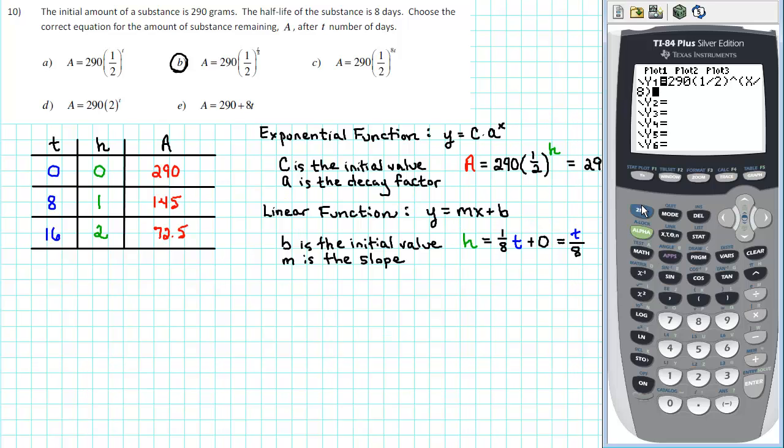So we'll go to second window, which is table set. We'll start the table at time equals 0 and then we'll increment by 8 because the half-life is 8 days.